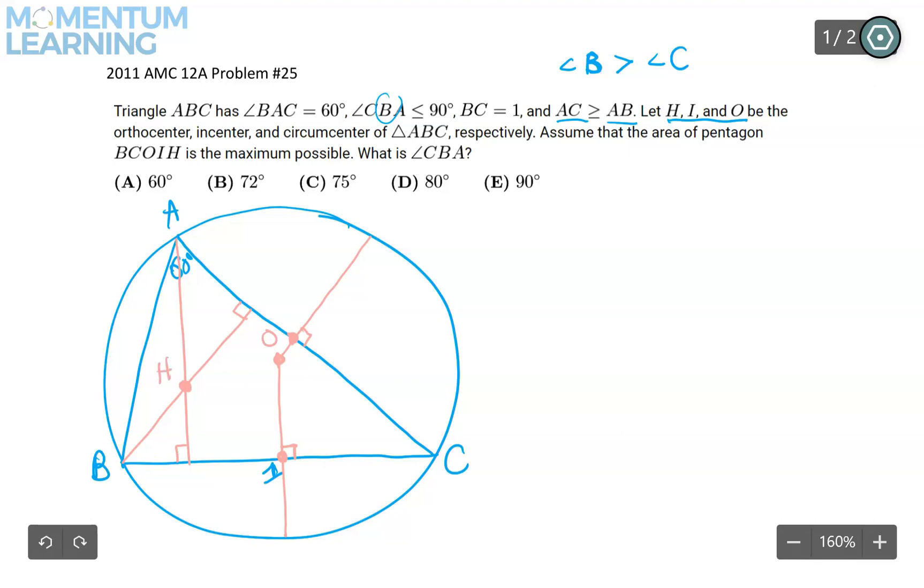Finally, we need the incenter. For the incenter, I need to draw two angle bisectors. So maybe I can draw this one. That's definitely an angle bisector, because this is the midpoint of arc BC. And because this one is also a midpoint, I can just go ahead and draw this angle bisector as well. So this must be I.